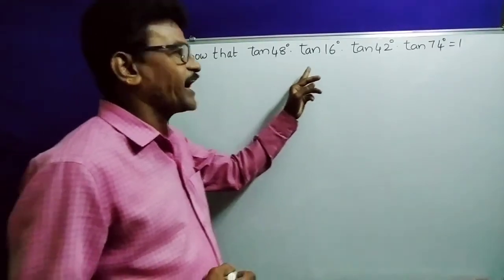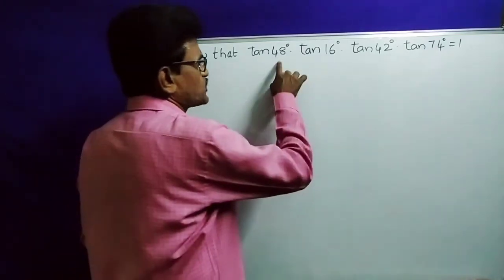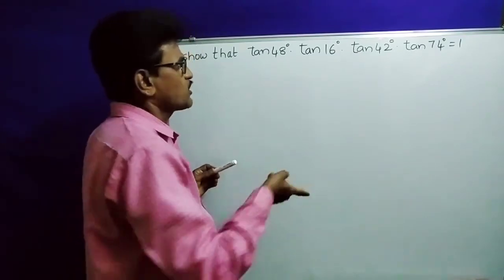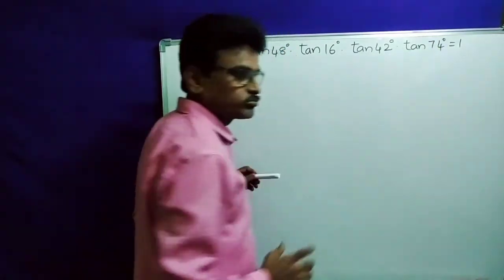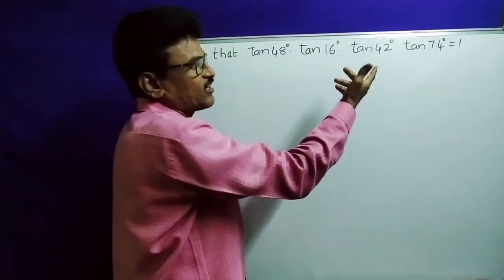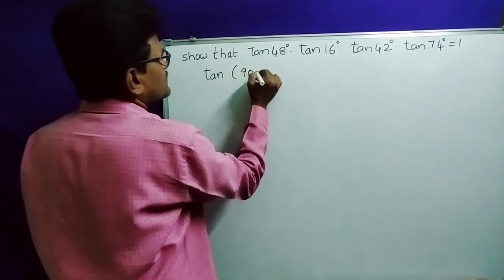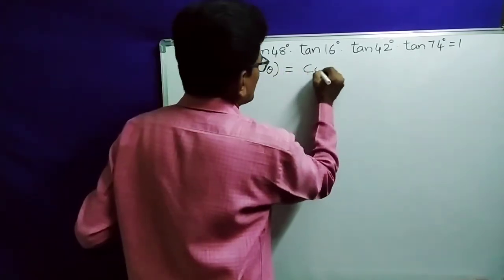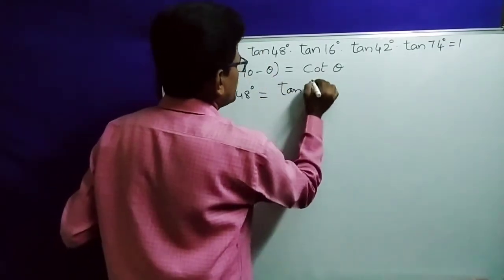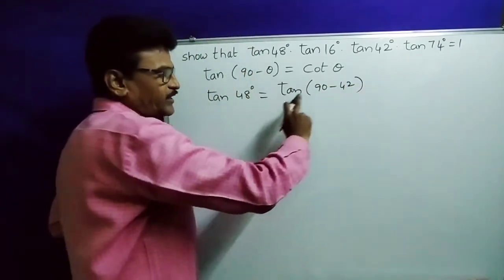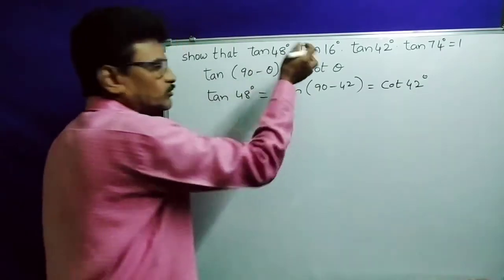Next: show that tan 48 · tan 16 · tan 42 · tan 74 equals 1. To solve this, observe that 48 degrees and 42 degrees are complementary angles — their sum is 90. Also 16 plus 74 equals 90, so these are also complementary. We know tan(90 minus theta) is cot theta. So tan 48 I am writing as tan(90 minus 42), which equals cot 42.